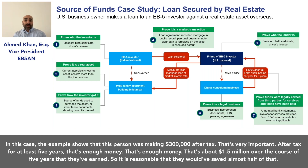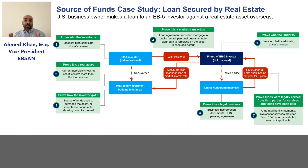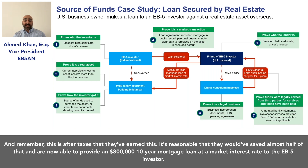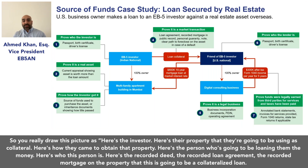That's about 1.5 million dollars earned over five years after taxes, so it's reasonable that they would have saved almost half of that. They are now able to provide an eight hundred thousand dollar, ten-year mortgage loan at a market interest rate to the EB-5 investor.